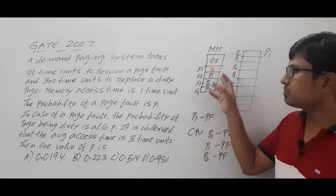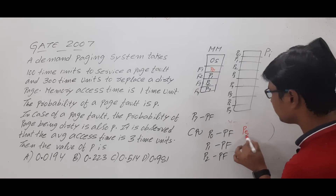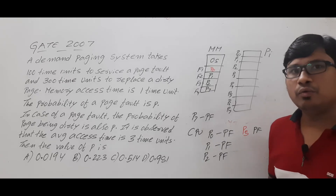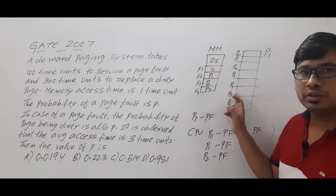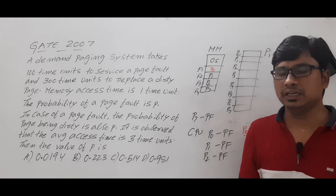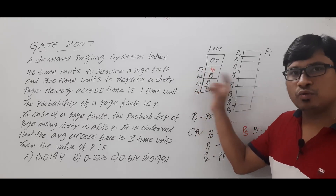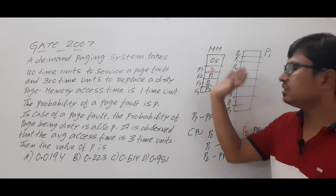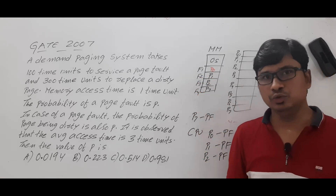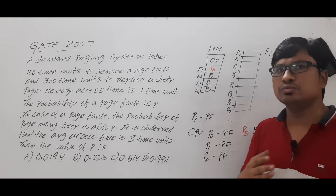Now if the CPU requests page 5, it is not available — another page fault. Since main memory is full, we must use a page replacement technique. We find a victim page from the existing pages, swap it out, and swap in page 5. The choice of victim page depends on the page replacement strategy, such as FIFO, LRU, or optimal page replacement algorithms, which will be discussed in coming lectures.